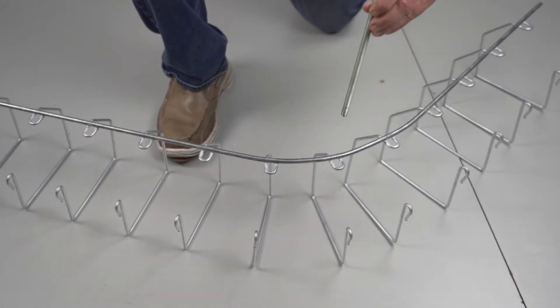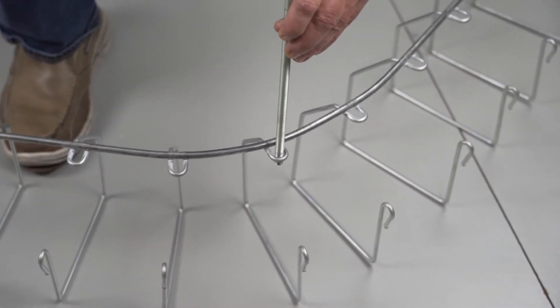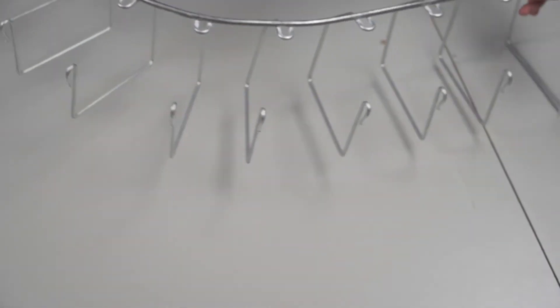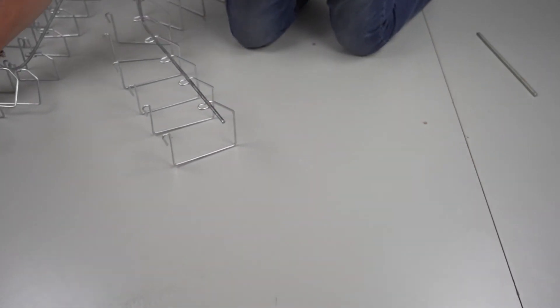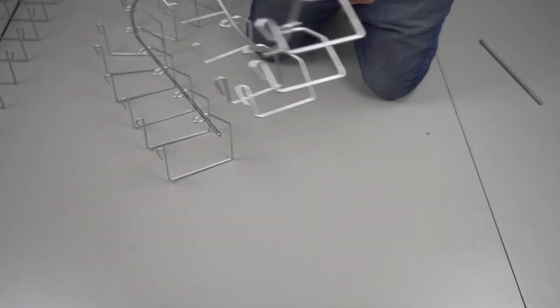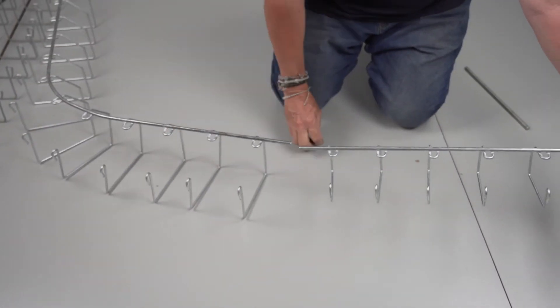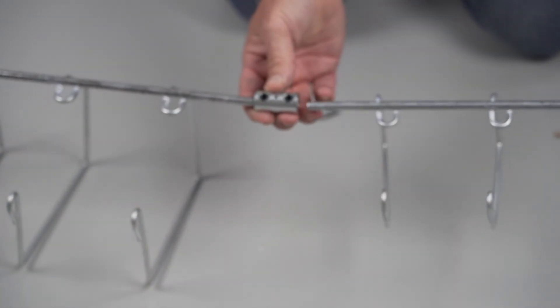And again when we bolted on the threaded rod, that loop on the top is what we're going to use to mount the threaded rod directly to the tray. Now we can also join our sections of tray together. Very easy. It's a barrel bolt.